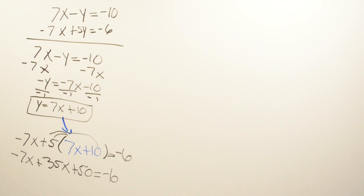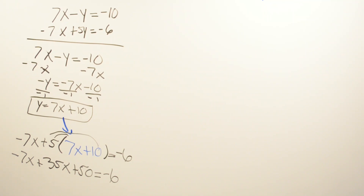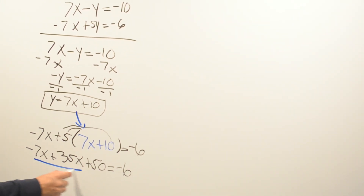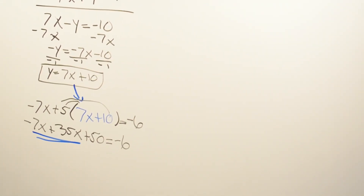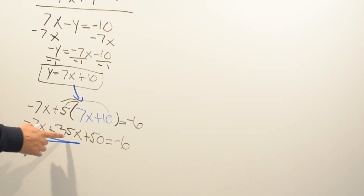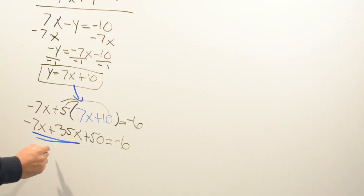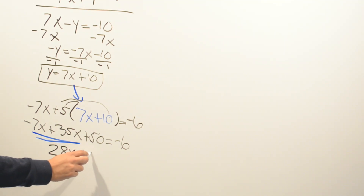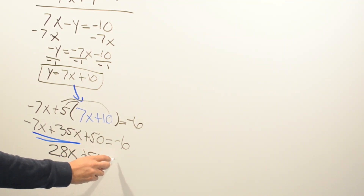Now we combine like terms. We have negative 7x and positive 35x — two different signs, so we subtract. The larger value is 35, which has a positive sign, so 35 minus 7 gives us 28x. So we have 28x plus 50 equals negative 6.